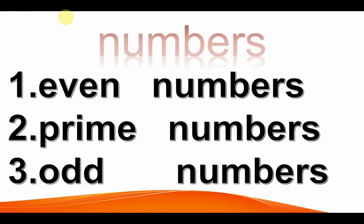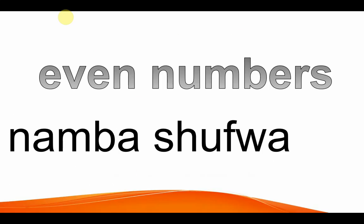We're going to study the group of numbers. There are three main groups of numbers. There are even numbers, prime numbers, odd numbers. First we have even numbers, which in Swahili we call number shufwa. Even numbers are divisible by two without remainder. They are divisible by two, without remainder. When you divide by two, this number divides completely without remainder. It's in the group of even numbers.